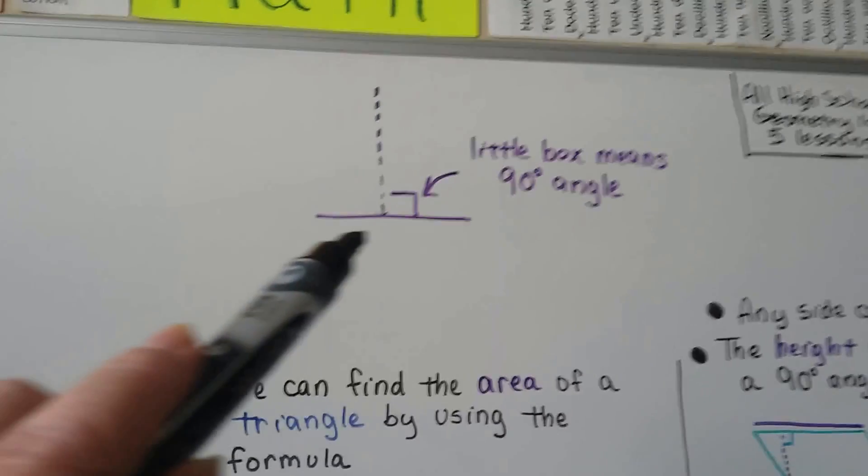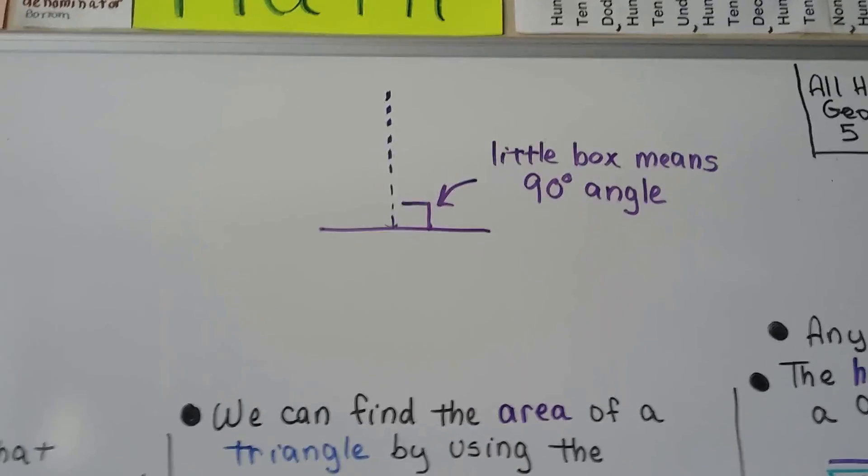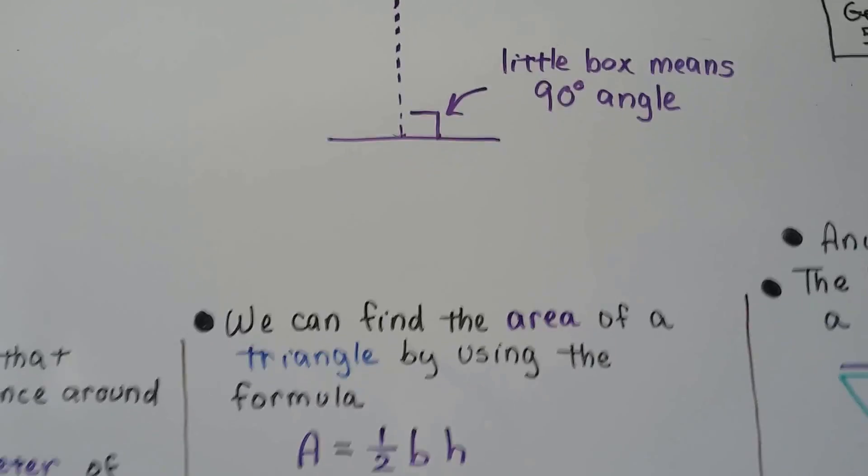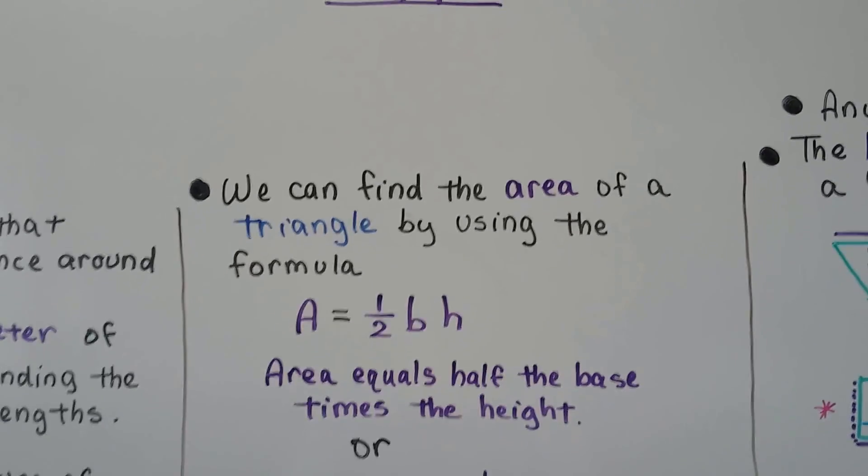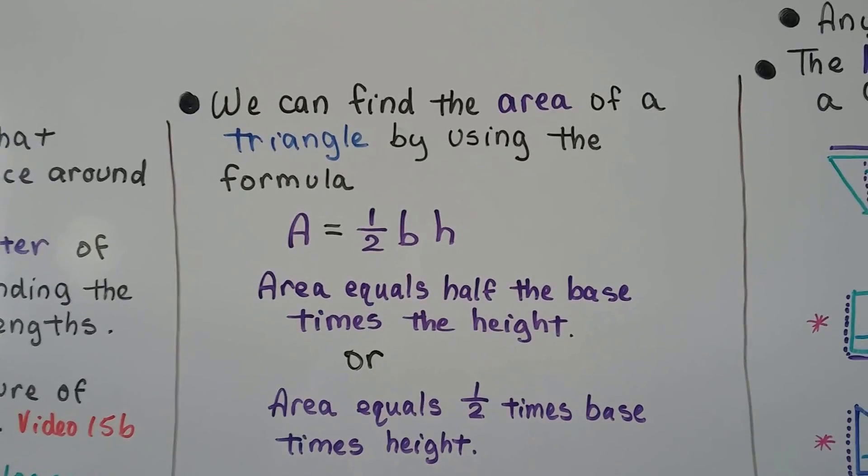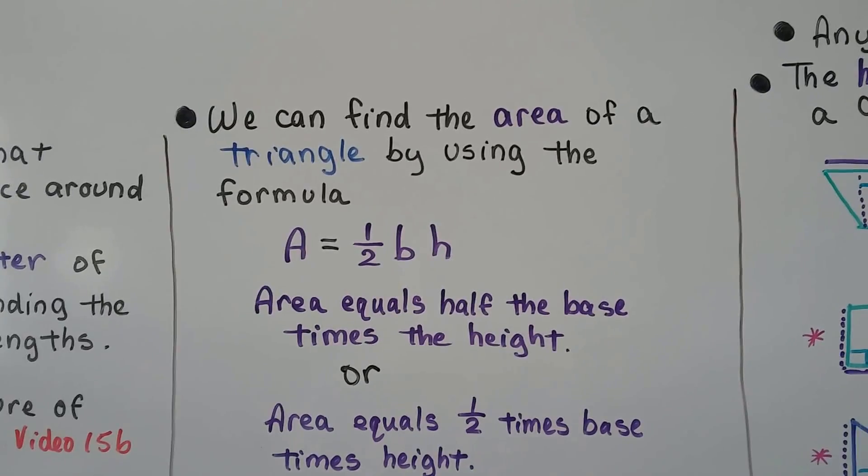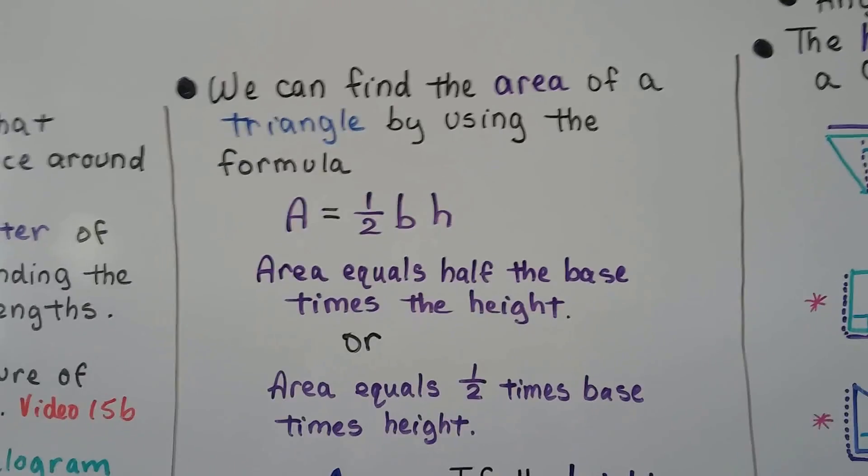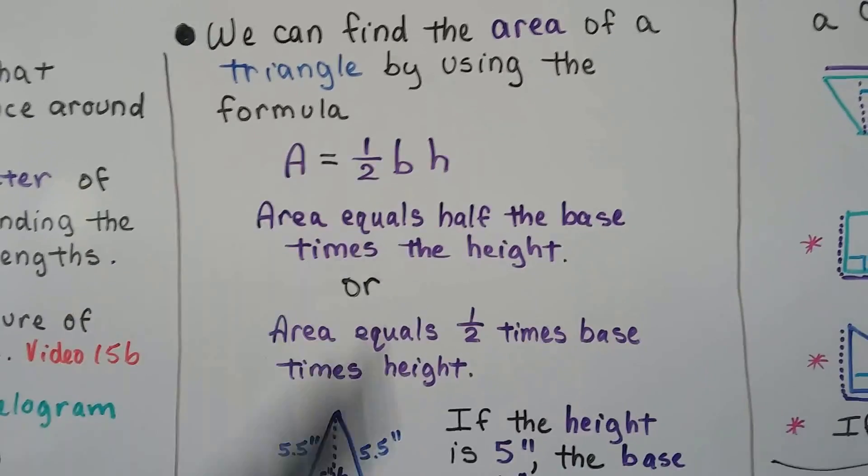Keep in mind that if you ever see this little box, it's telling you it's a 90 degree angle. We can find the area of a triangle by using the formula A equals half BH. It means the area equals half the base times the height, or you can look at it as half times base times height.